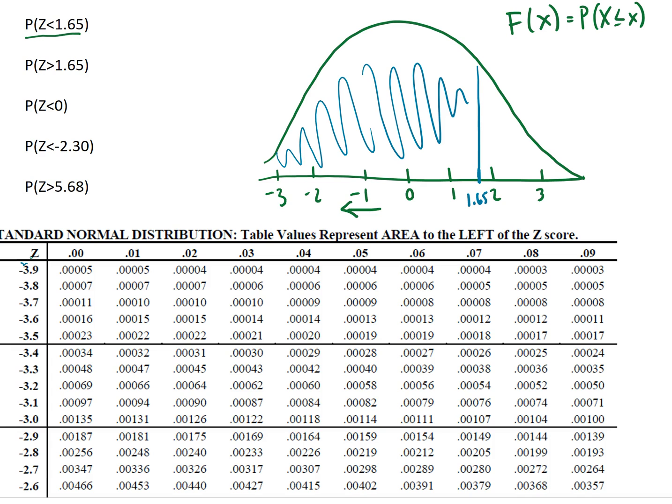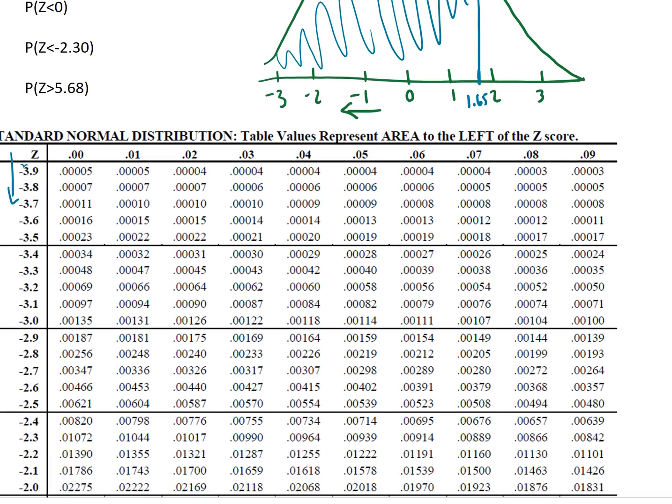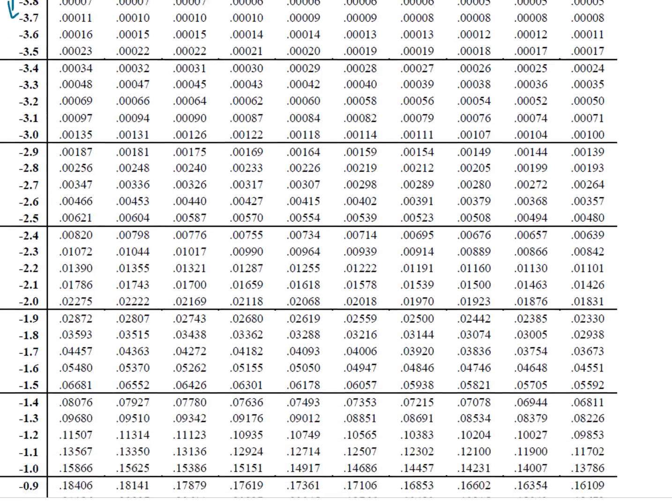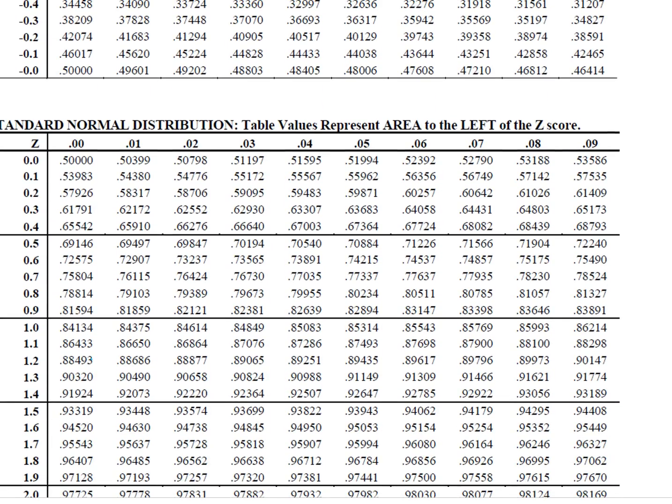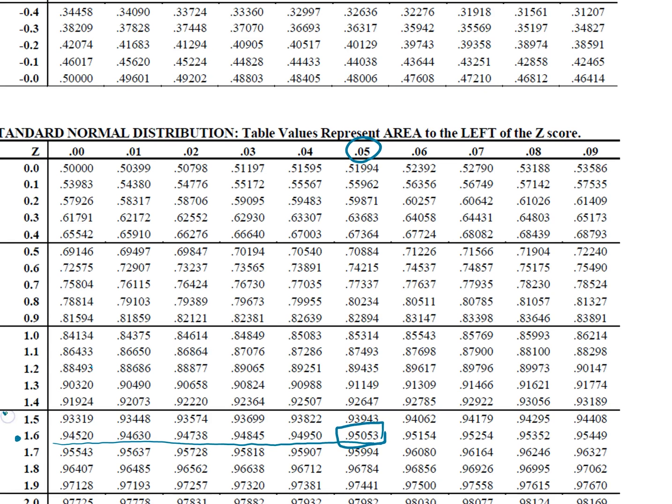We can start over here with the z's and we can scroll down until we find the value 1.65. So if we keep scrolling we find the value 1.6 and we want to match that up with its one hundredths place position. So that's 0.05 and so then this value here 0.95053 represents the value of 1.65.